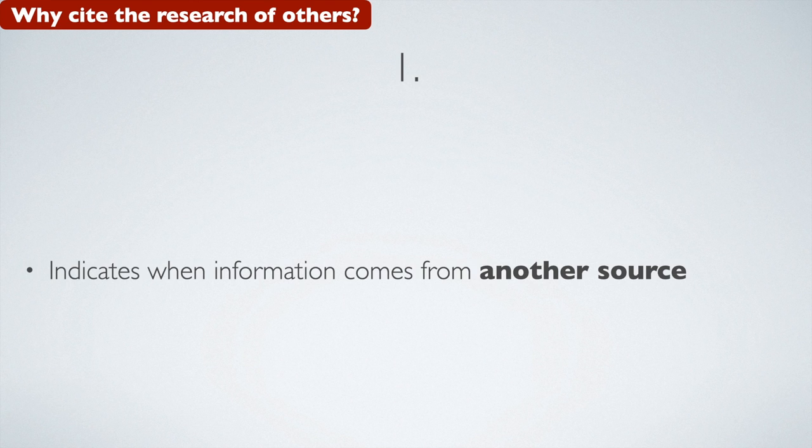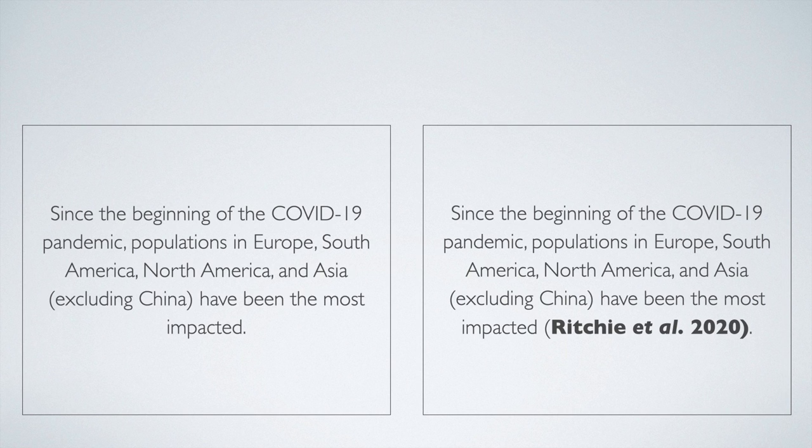Number one, we cite the research of others to indicate when information comes from another source. For the sentence on the left, no source has been provided. When a reader sees this sentence in the literature, they might think that this information is from the author's own research and it doesn't require the source to be cited, or the reader may think it is common knowledge and that too doesn't require the source to be cited.